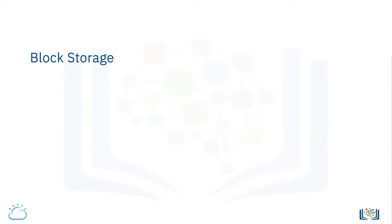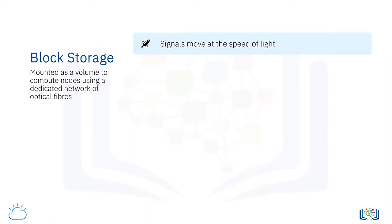Block storage is mounted as a volume to compute nodes using a dedicated network of fibers through which signals move at the speed of light. These fiber optic networks are more expensive to build than the Ethernet ones which deliver file storage, which is one reason why block storage tends to have a higher price point.